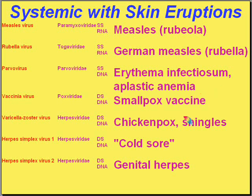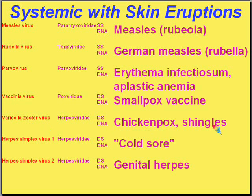Smallpox is caused by the vaccinia virus, part of the official poxviridae family. Then we have the VZ virus, because it causes both varicella — common chicken pox, usually in children — as well as herpes zoster or shingles in adults, generally following a dermatome distribution. Same virus, different disease, different age groups.